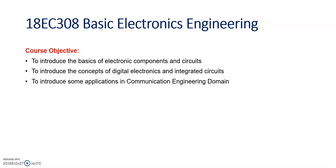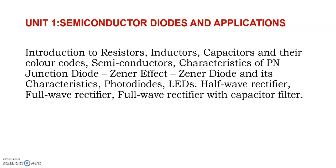The subject is Basic Electronics Engineering. The first unit will introduce semiconductor diodes and applications. In this unit we will deal with an introduction to resistors, inductors, capacitors, and their color codes. These are passive components in electronics. A resistor resists the flow of current, an inductor stores current, and a capacitor stores voltage. These three devices have specific relationships between voltage and current, and we will see how to identify their values and specifications.